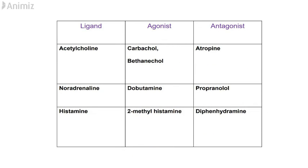For the ligand acetylcholine, carbachol and bethanechol are agonists and atropine is the antagonist. For noradrenaline, dobutamine is the agonist and propranolol is the antagonist. For histamine, 2-methylhistamine is the agonist and diphenhydramine is the antagonist.